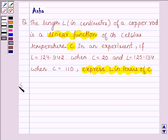Let's now begin with the solution. We are given that L is a linear function of its Celsius temperature. Therefore, L equals AC plus B, since any linear function is of the form AX plus B equals 0. This is the general form of a linear equation.